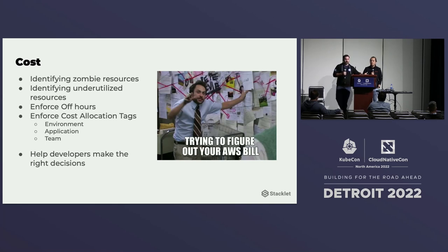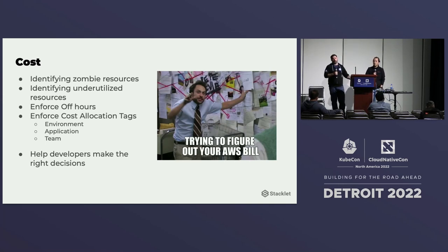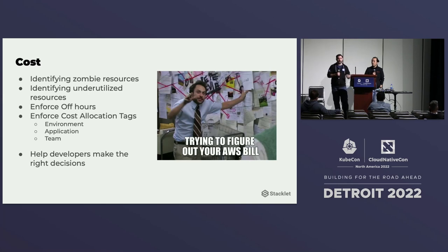That's where we use Cloud Custodian today — we can run policies and identify underutilized resources, zombie resources. We can enforce tags and alert the owners to say, hey, we need to know what this resource is and who it's from. That way, if it is violating any of our rules, we know who to communicate with. We're not looking to police the developers; we're just looking to empower them to be productive and make the right decisions.